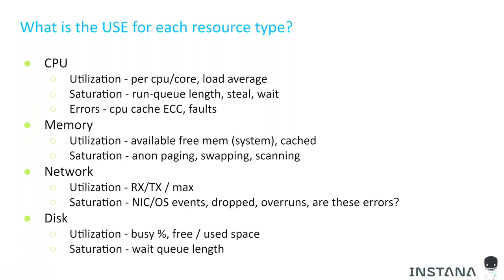The point of USE was to monitor the underlying infrastructure to ensure hosts, networks, and storage subsystems were operating within specified constraints. Each resource type has a different indicator for utilization, saturation, and errors, and these often differ based on the underlying host type or operating system. For example, CPU utilization could be per-core or load average; with memory it could be available free memory or what's cached. Saturation could be anonymous paging, swapping, or scanning — it becomes very contextual and dependent on the operator to define.